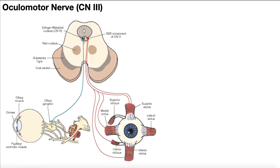Now a couple of things here. Look at this cross section of the brainstem. You can see the substantia nigra here, and here's the red nucleus. This over here is actually the periaqueductal gray matter. So this is actually a cross section of the midbrain.